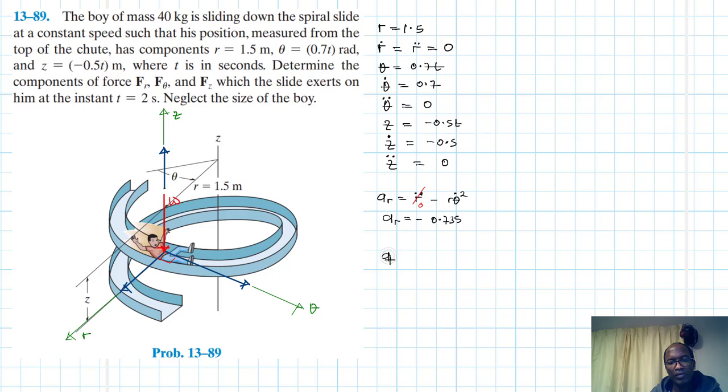Then we have A theta equal to r theta double dot plus 2r dot theta dot. And both these, this one is 0 as well as this one, therefore our A theta is just equal to 0. Then we have Az which is equal to z double dot, and we know this is just equal to 0 also.